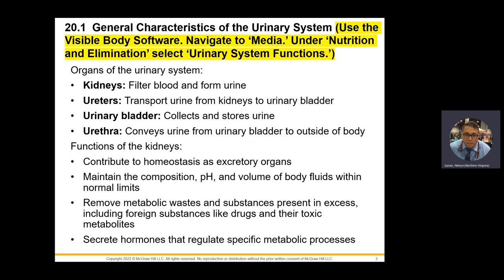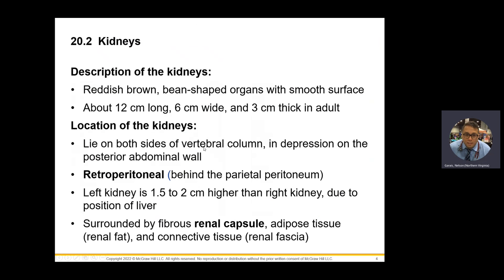We're going to talk about the RAA system — the renin-angiotensin-aldosterone system — because those are hormones that tell my kidney what to do and also tell my adrenal cortex what to do. It messes with blood pressure, and that's really important. If you don't know blood pressure, you don't know medicine.